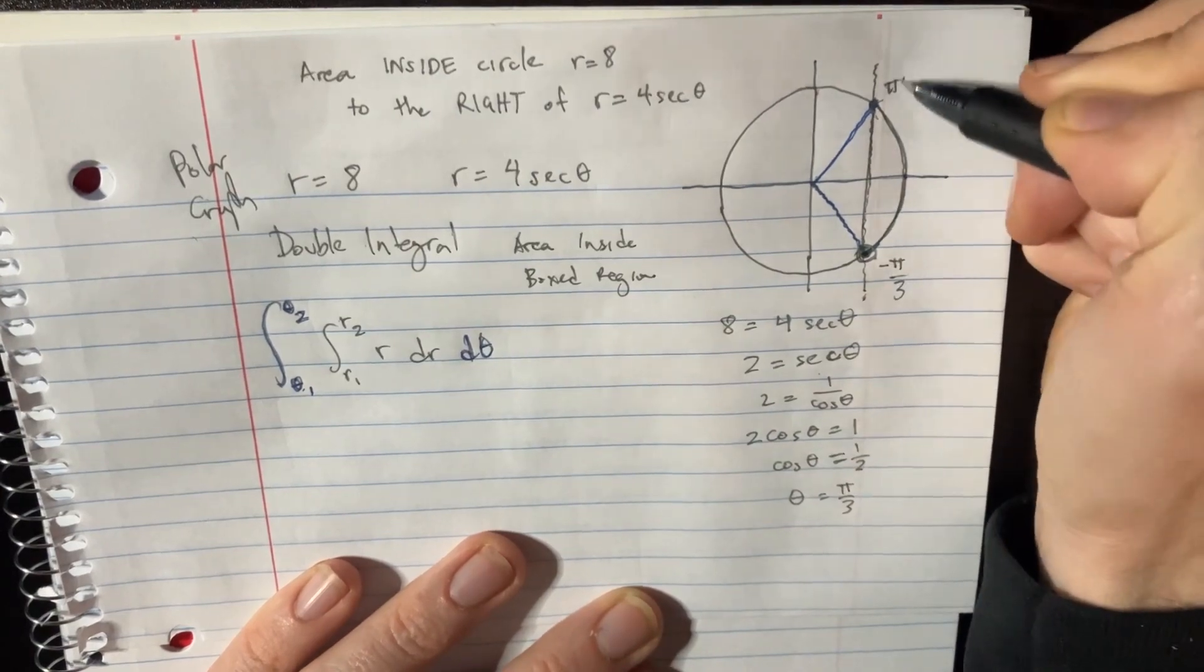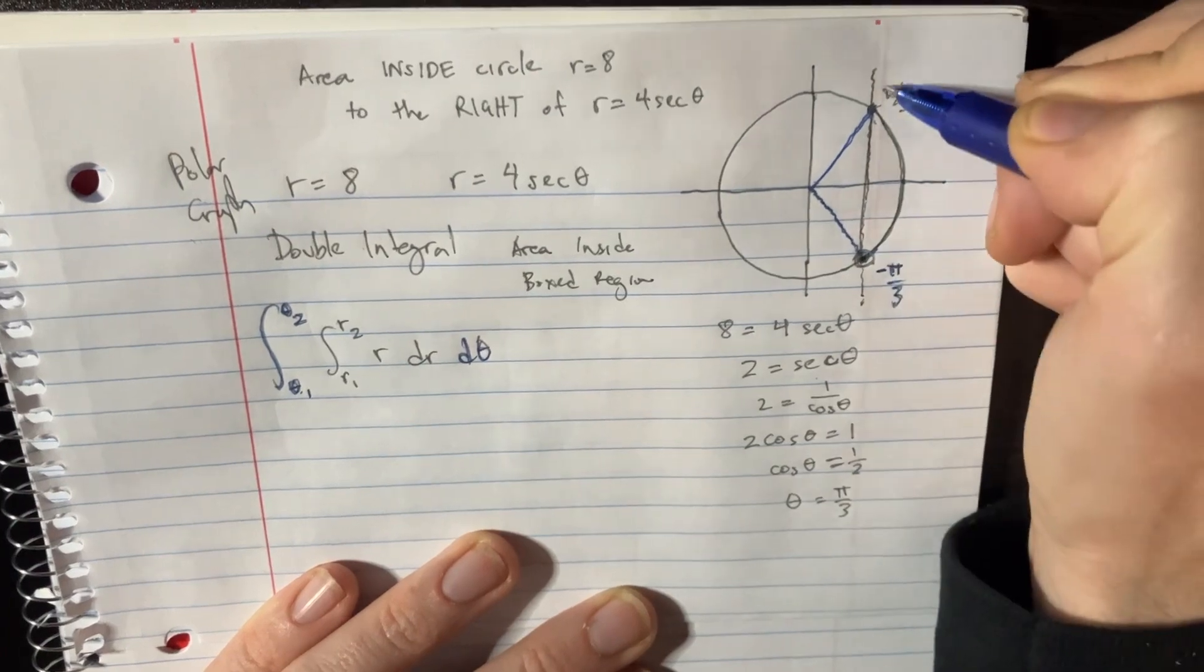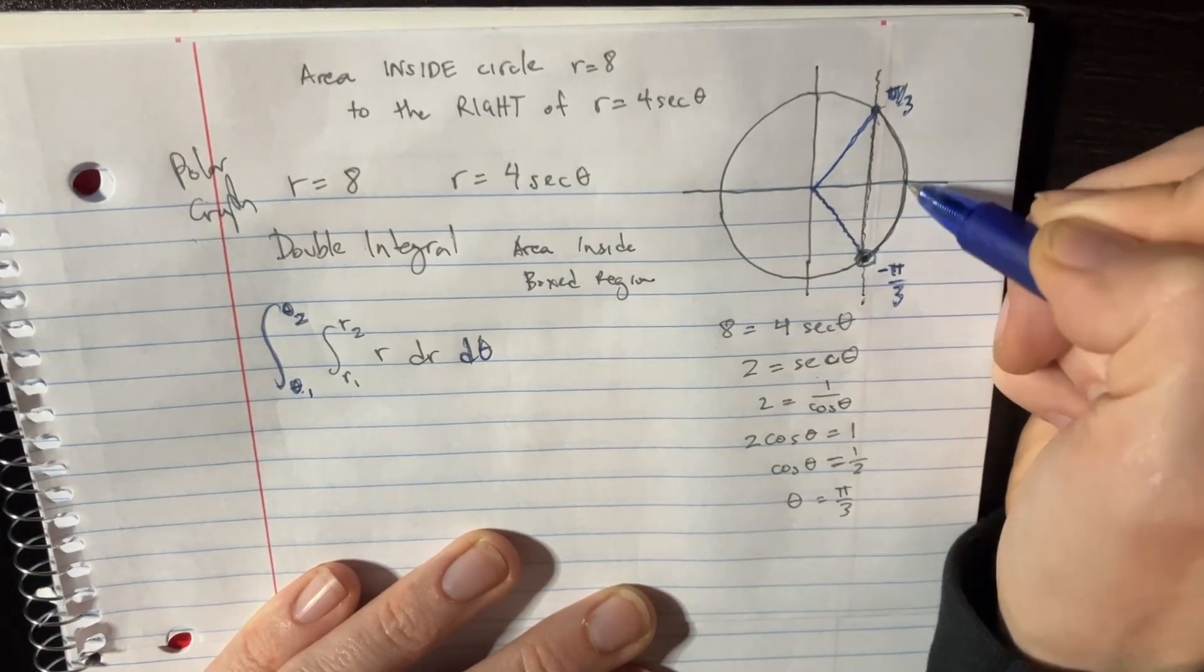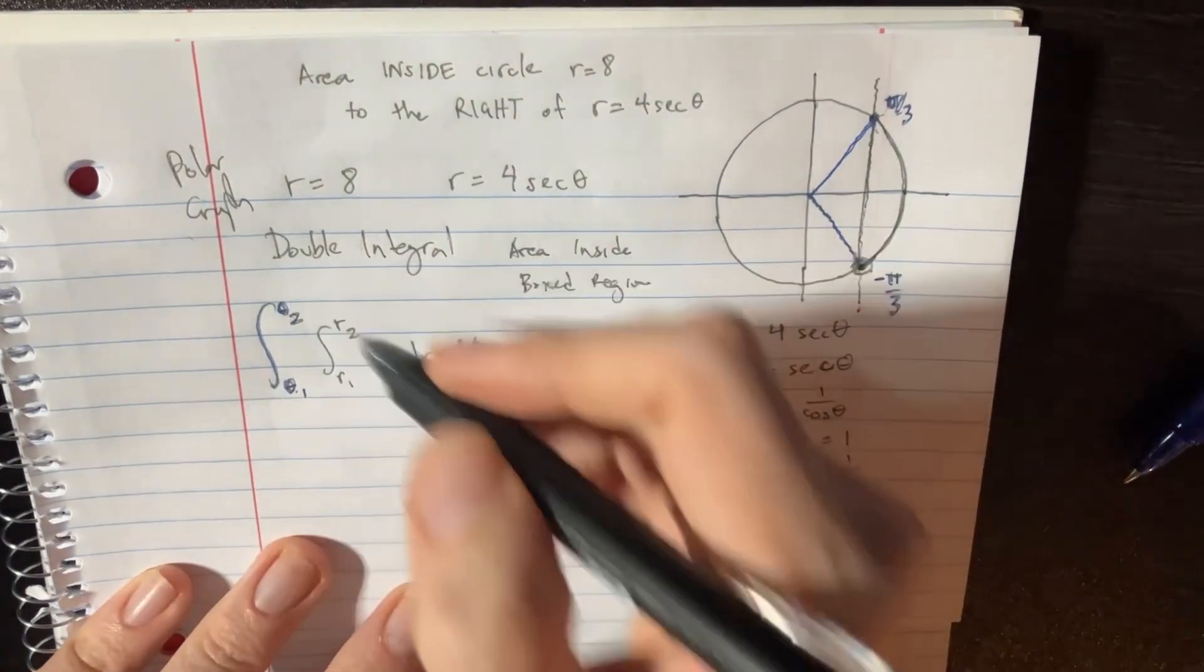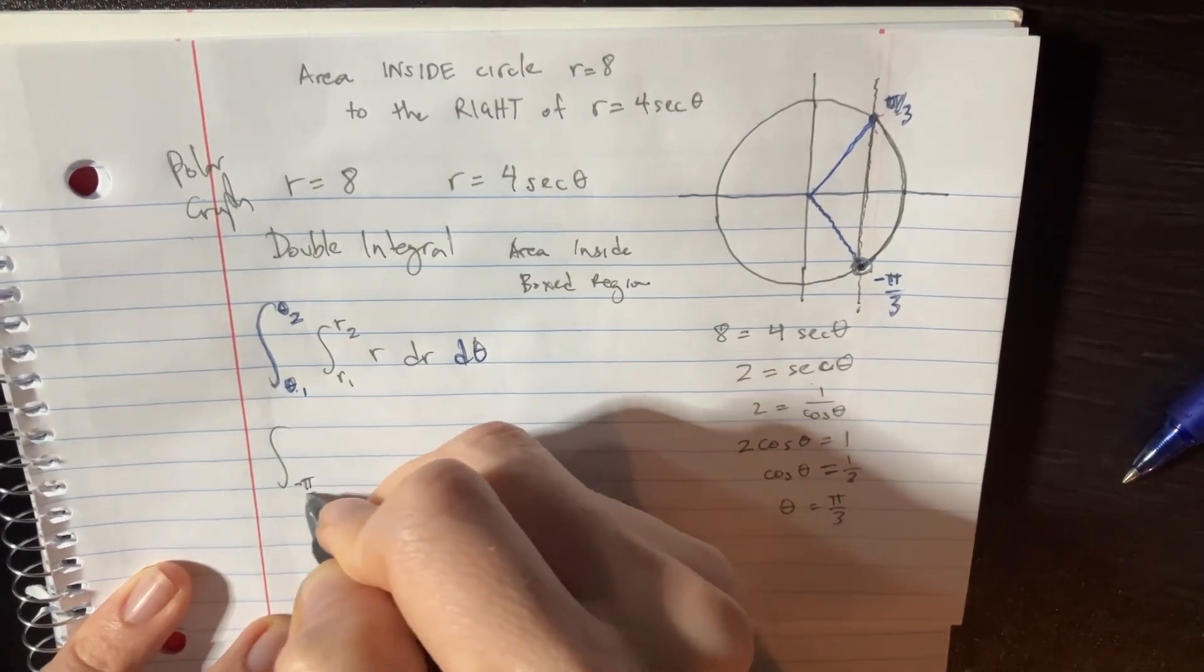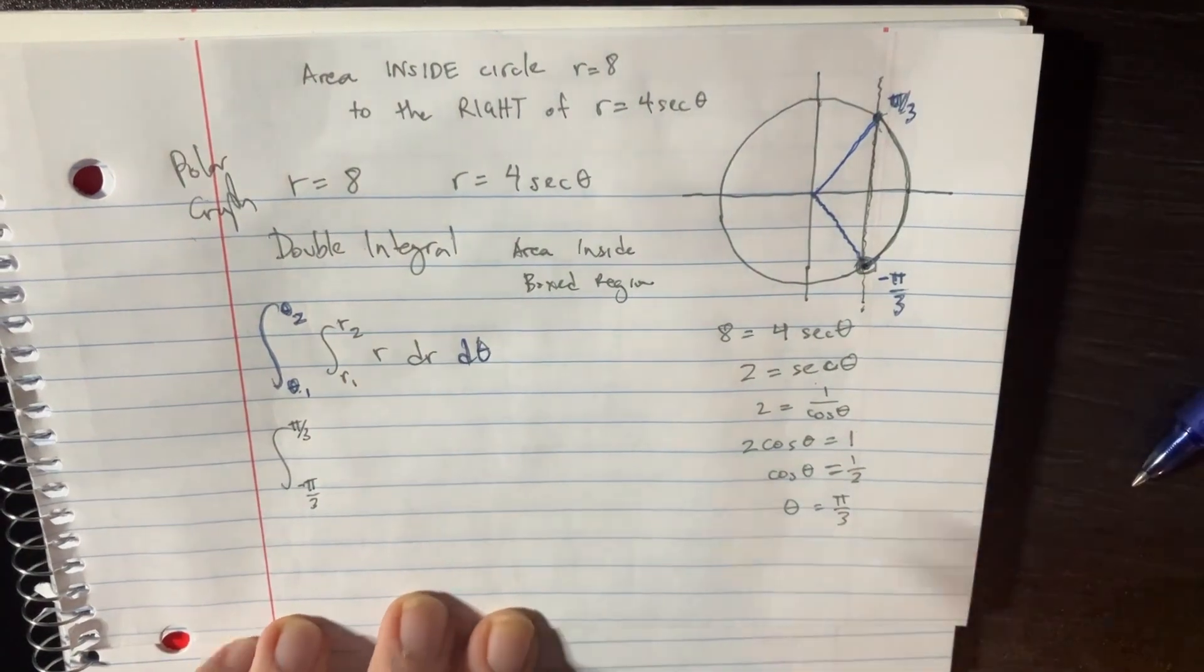And then pi over 3 over here. Okay, so that's going to be where we're, sort of like I said, going from here all the way over there. And the question is now, what's our r's? So we're going to go negative pi over 3 to pi over 3, and then we have r's in the middle that we're going to try to find.